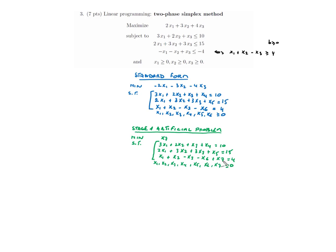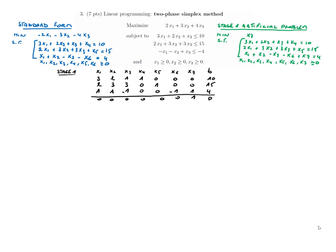We have added the artificial variable x7. If the original problem has a feasible solution, the artificial problem — which minimizes x7 — will have a solution with cost zero, meaning x7 equals zero. So we start by solving this stage one artificial problem.